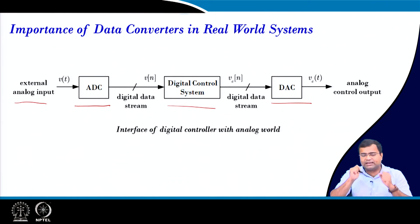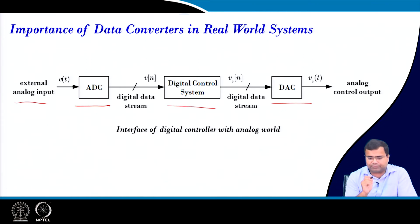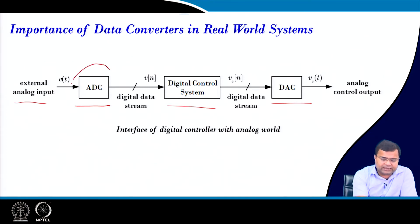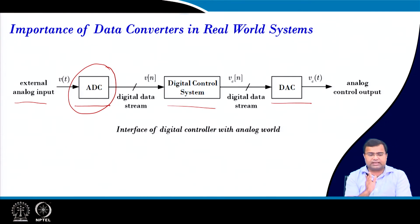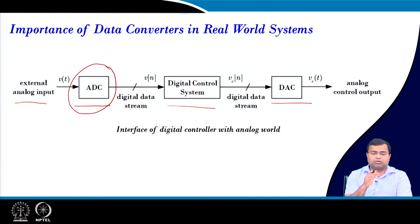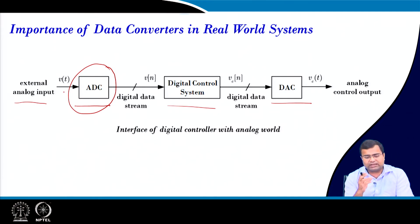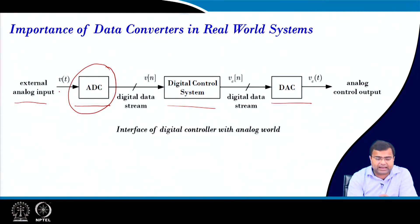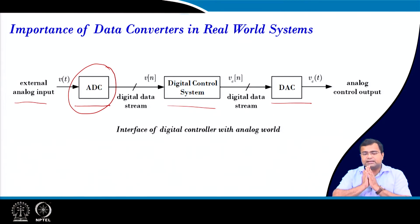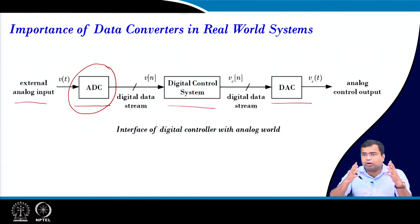From a power converter point of view, if you consider an ADC, we first have to consider whether it will have a parallel interface or a serial interface. Then what is the data format — whether it is 2's complement or offset binary. Then, regarding the analog side: what resolution is achievable, what is the analog span, what is the propagation delay, how much sampling rate it can handle, and what is the power consumption of the ADC.